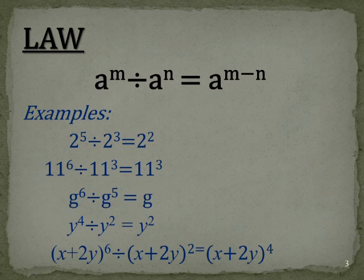And even in the last one, where we've got something that looks a lot more complex, the same principle applies. So we've got x plus 2y all to the power of 6 divided by x plus 2y to the power of 2. We're going to end up with x plus 2y, which is the base, all to the power of 6 take 2, which is 4.